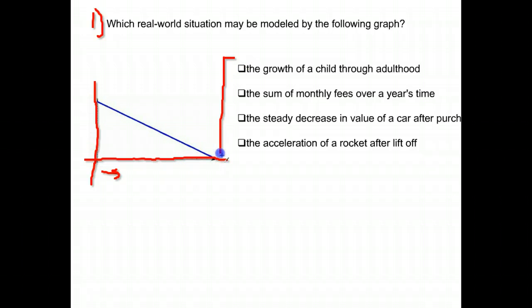Look at these situations. Which of these would be decreasing or getting smaller as time goes by? The growth of a child, does that get smaller? Do they get shorter as they go? The sum of a monthly fee over a year's time. So if you get a fee every month, does it decrease or does it add up to be more? We want something that's decreasing. The steady decrease in the value of a car, is that a decreasing value? Or the acceleration of a rocket after liftoff? You need to select the one that is decreasing because that line right there represents a decreasing value.